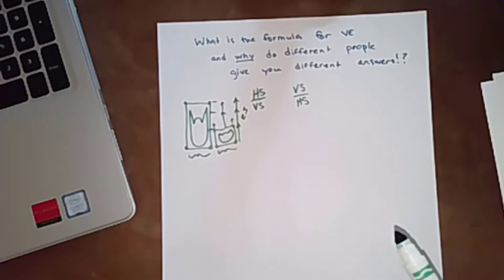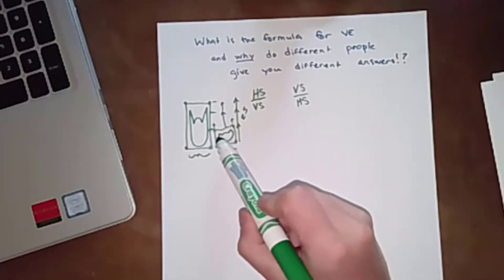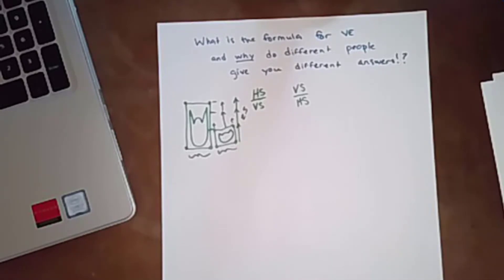So what we're doing when we're trying to calculate vertical exaggeration is we're trying to give boring topography, or in some cases really interesting topography that just is over such a large area on a map that it doesn't show up well.